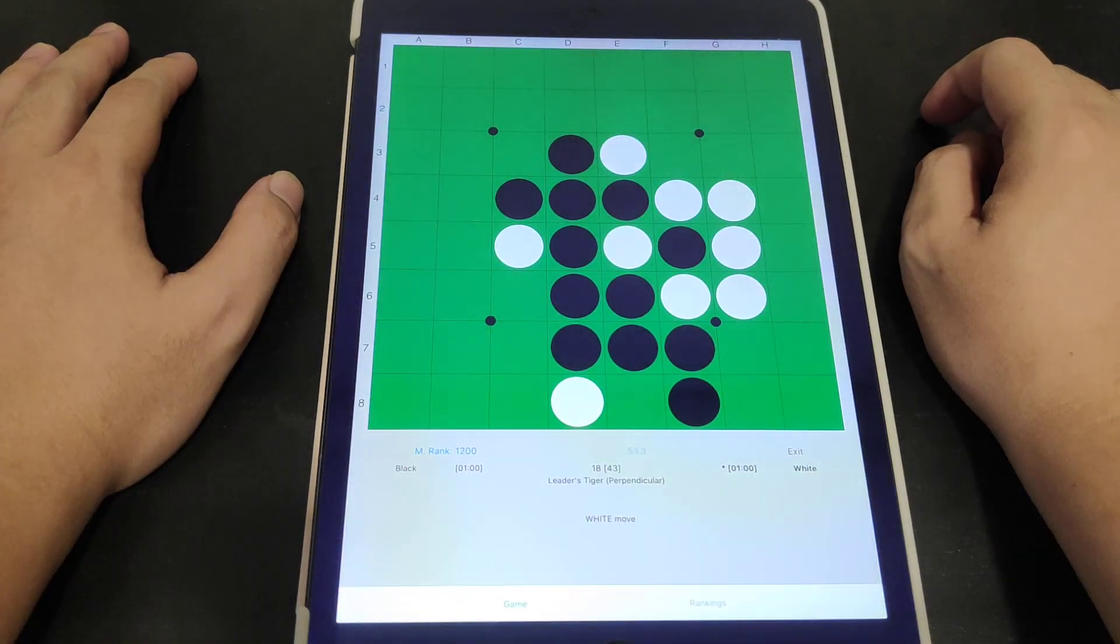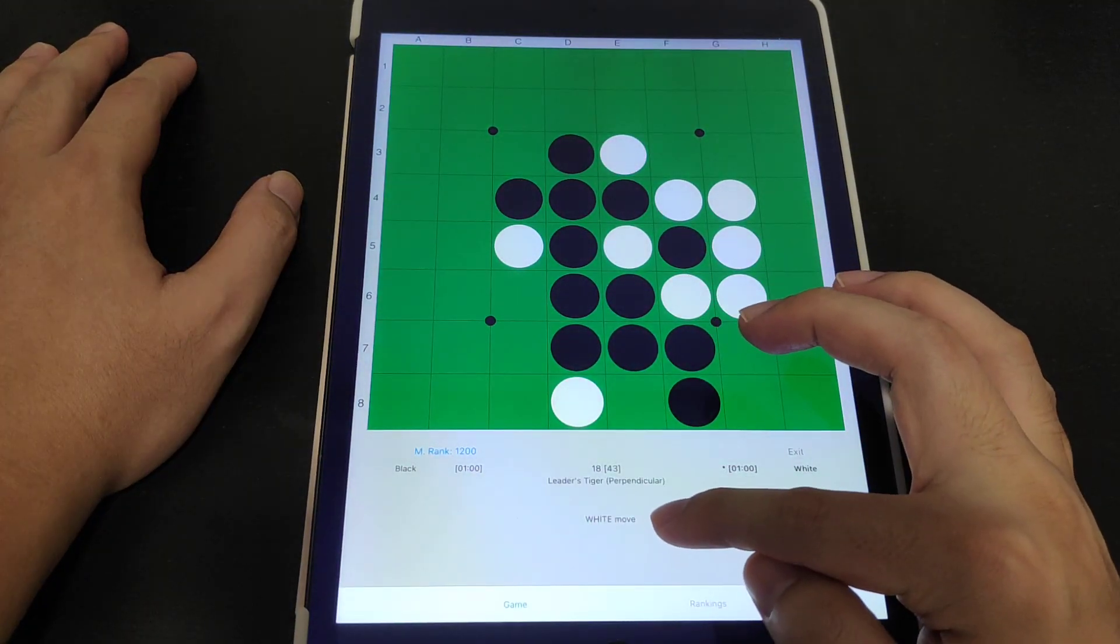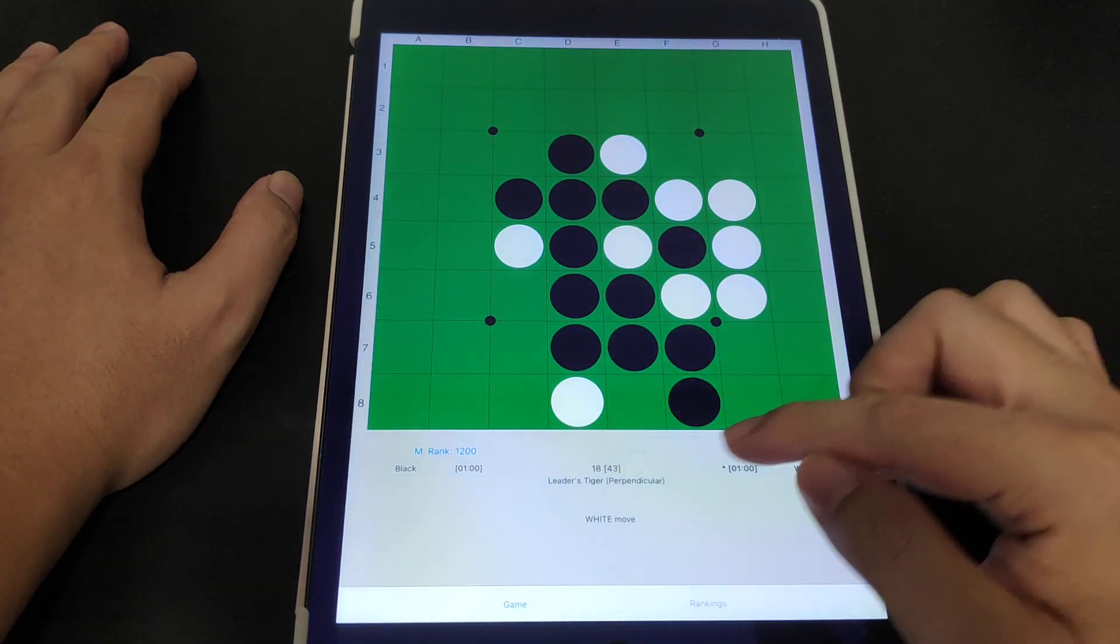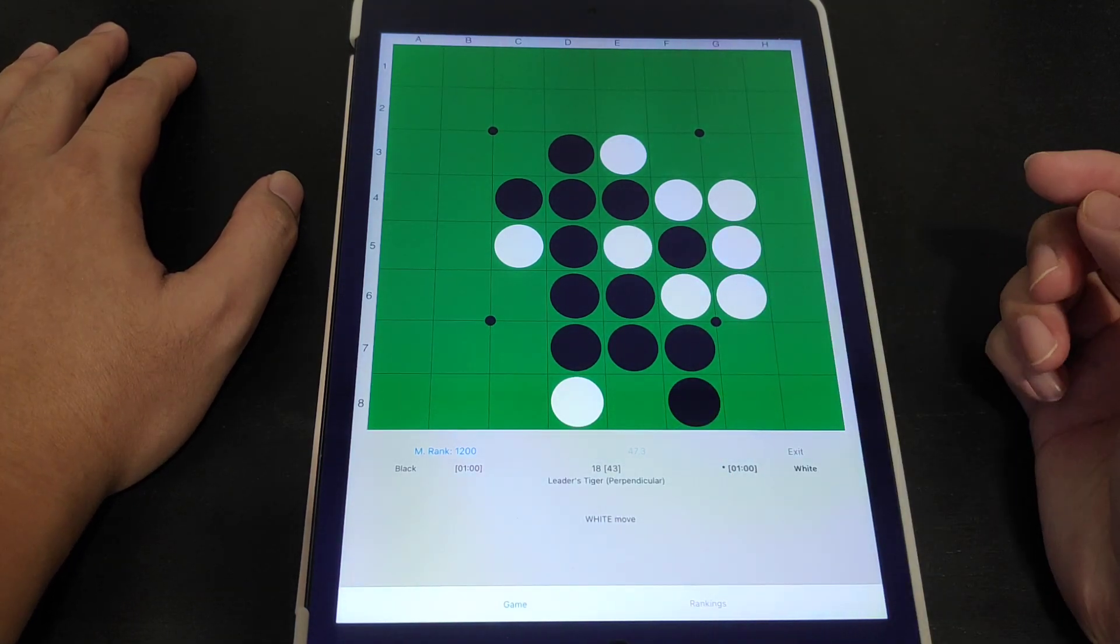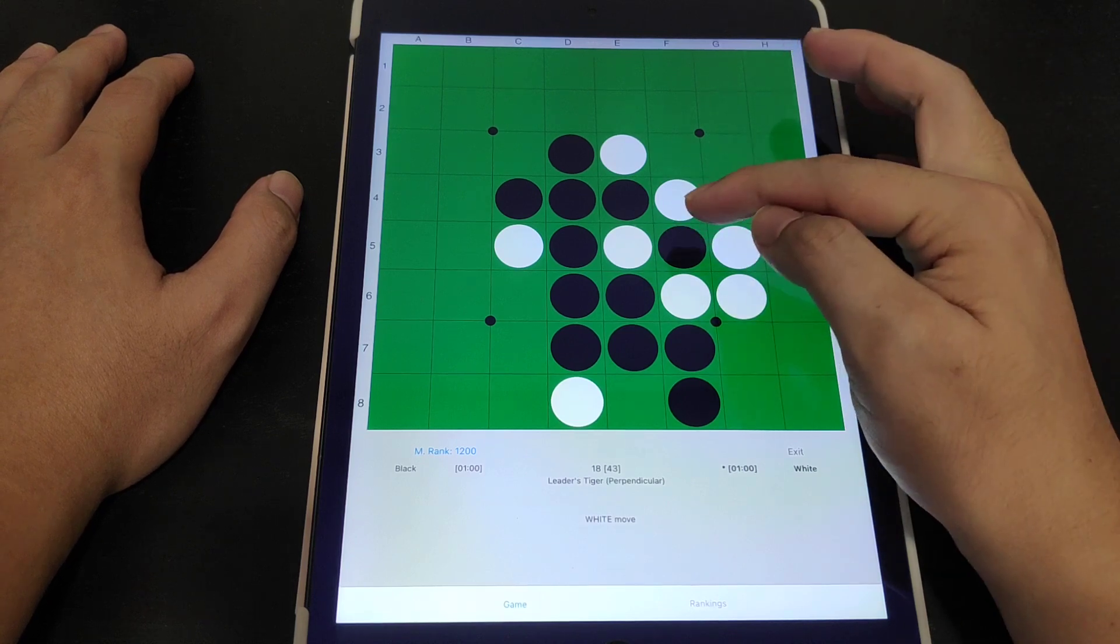I think this is a bit more interesting because mid game. Over here it's white's turn to move. It says white move and your rank is 1200.